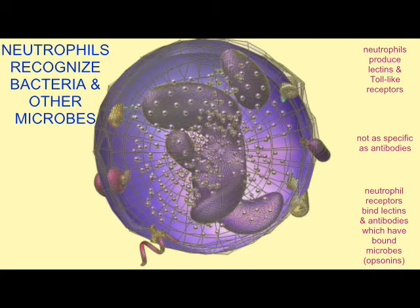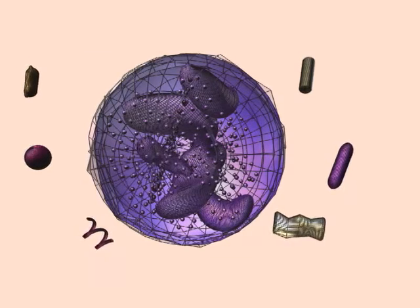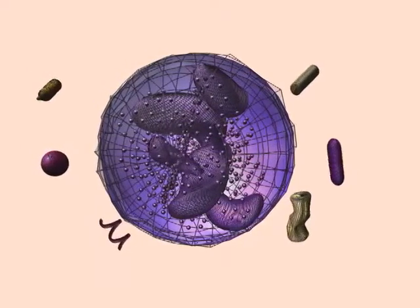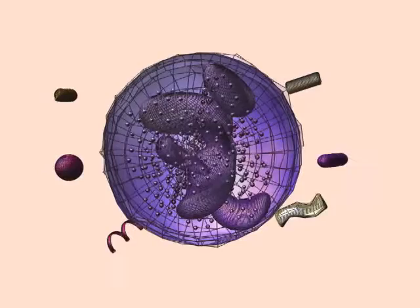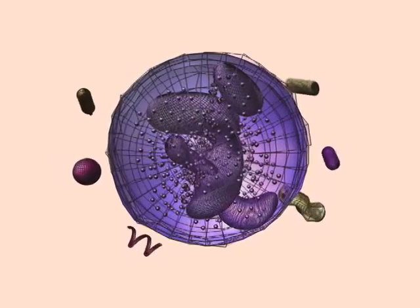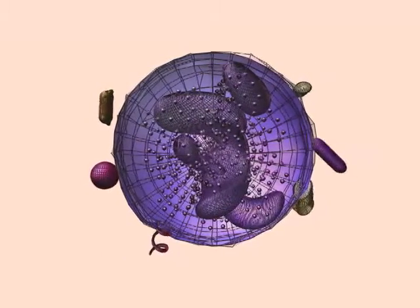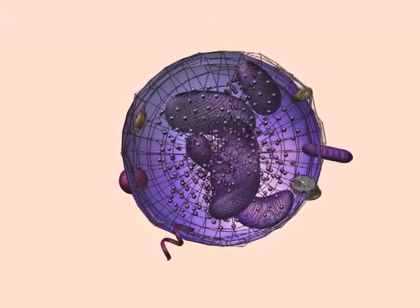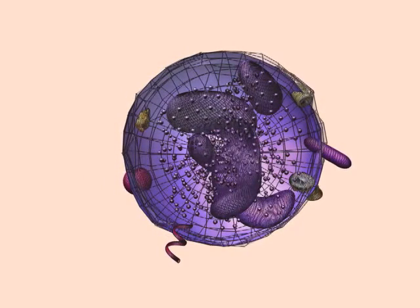Many of the receptors on neutrophil cell membranes allow them to recognize microbial pathogens. They do not recognize extremely specific antigens as an antibody would, but neutrophils do possess toll-like receptors and C-type lectins, which allow them to identify bacteria in general, as opposed to an antibody's ability to recognize a specific bacteria.